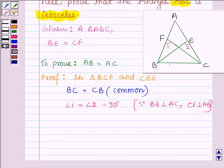Also, we are given that BE is equal to CF. Hence, by RHS congruence rule.